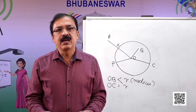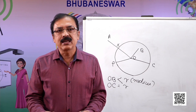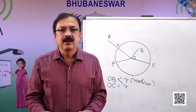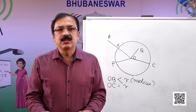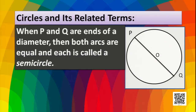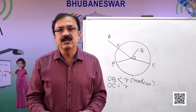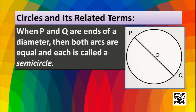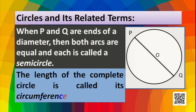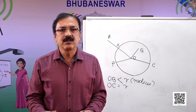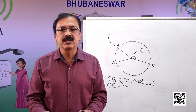Whenever we have two points on a circle, we get two arcs — one major arc and one minor arc. When we consider the endpoints of a diameter, we have two arcs which are equal in length. Such equal arcs are called semicircles. As shown in the picture, PQ is the diameter and on both sides we have two arcs of equal length — these two parts are called semicircles. The total length of the complete circle is called its circumference.